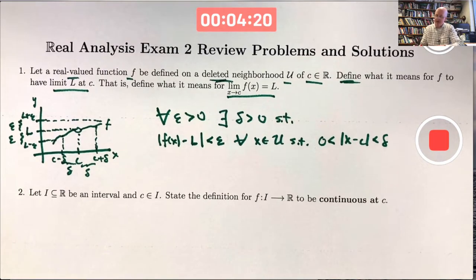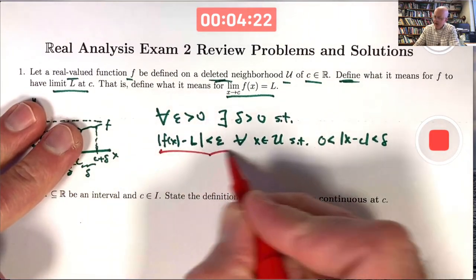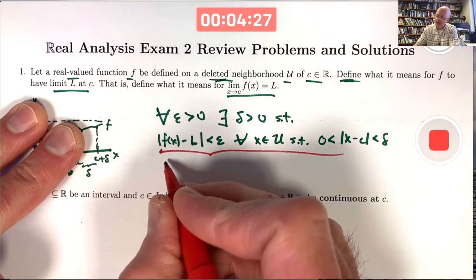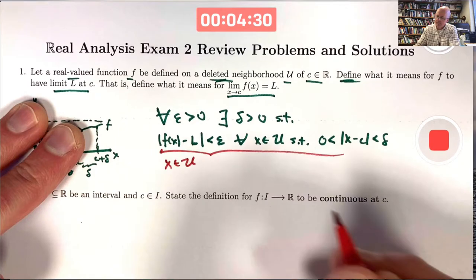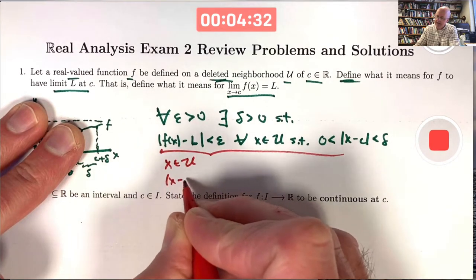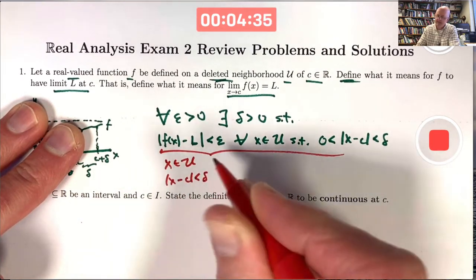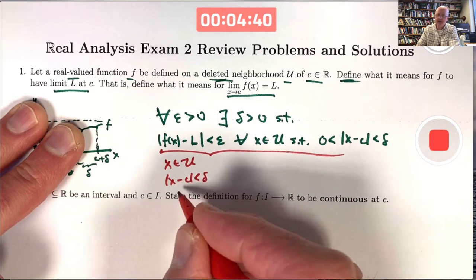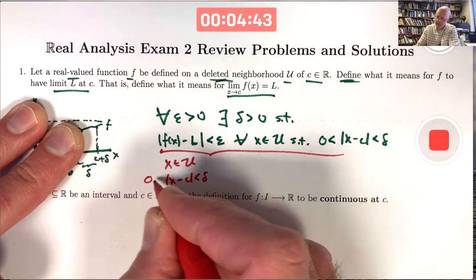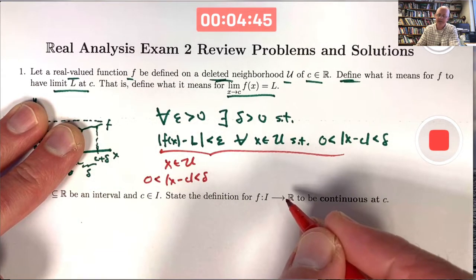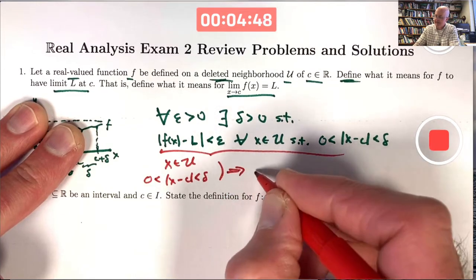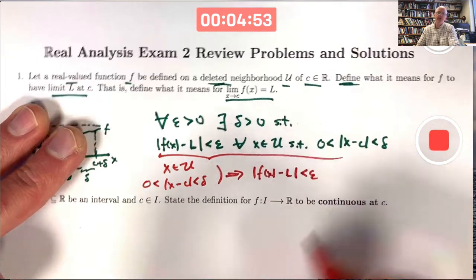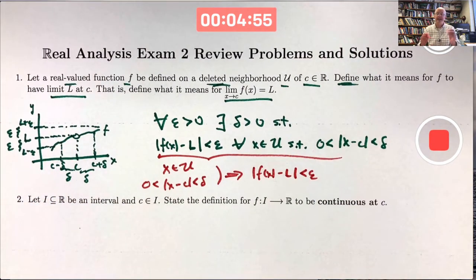If you want extra emphasis, you can say the distance between x and c is also greater than 0, but you don't really have to if you have the idea of a deleted neighborhood. A second way to write this is as an implication: if x is in u and the distance between x and c is less than delta — where x being in the deleted neighborhood u of c implicitly means x does not equal c — then the distance between f of x and l is less than epsilon. Either way is okay.